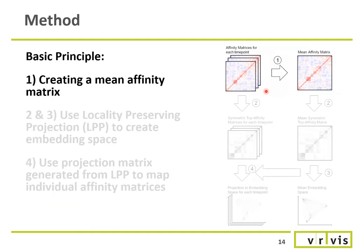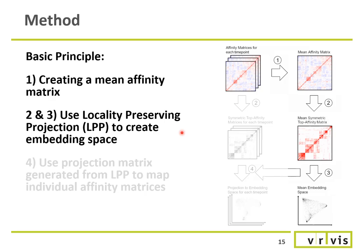Problem with this embedding space is that it depends on the data. So the spaces are not comparable for different affinity matrices. The solution for this problem is to create a common embedding space and map the data onto it. For this approach, we conceived the following method.